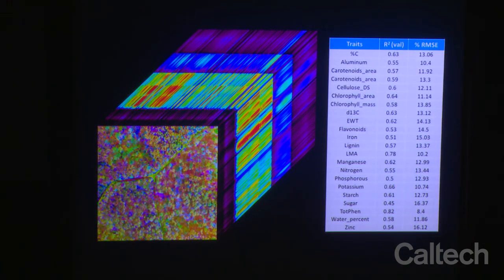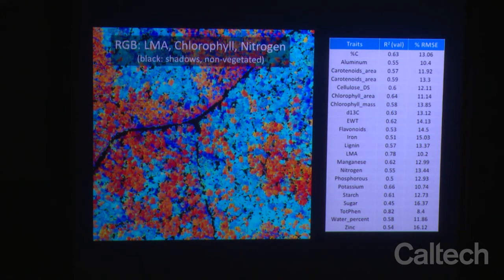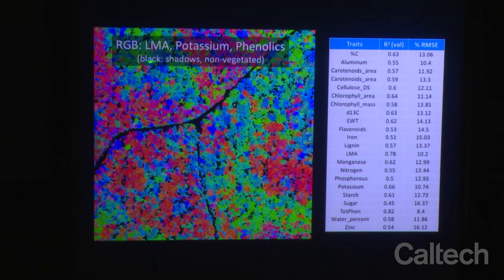Looking at our data, we can start to examine what foliar traits look like and the variability of foliar traits within domains. We're doing 22 traits in total. The key is the uncertainty value — almost all of these traits have uncertainty values less than 15%, which is really quite good. One can look at the different traits and visualize them: LMA, chlorophyll, and nitrogen, the three traits most closely related with photosynthesis. The higher LMA areas would be the conifers. Or we could look at LMA, potassium, and phenolics — the red areas are conifers with high LMA, higher potassium broadleaf species appear here, and species with higher phenolics, including defensive compounds, are also visible.